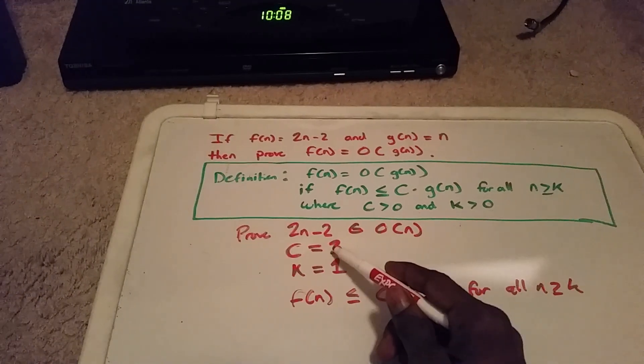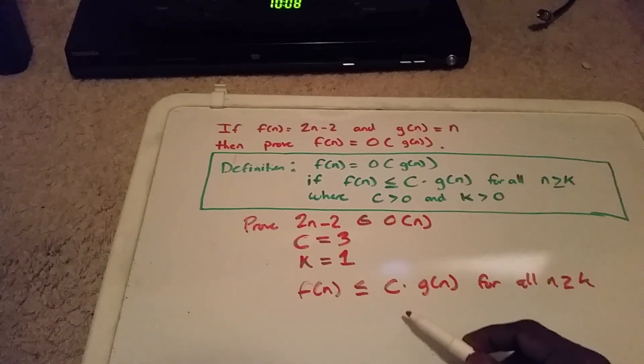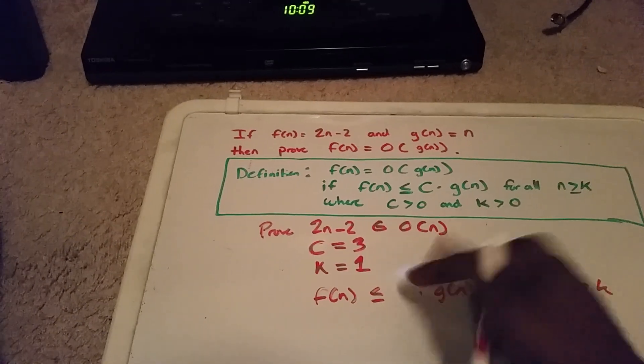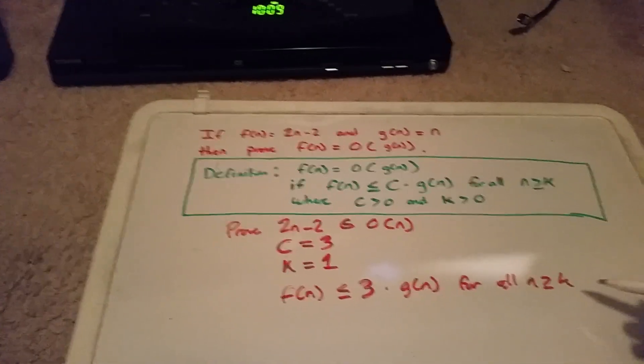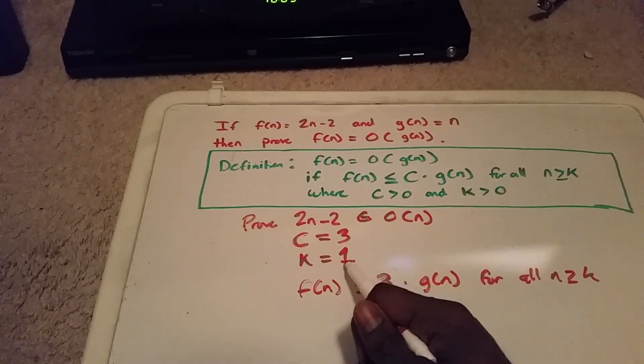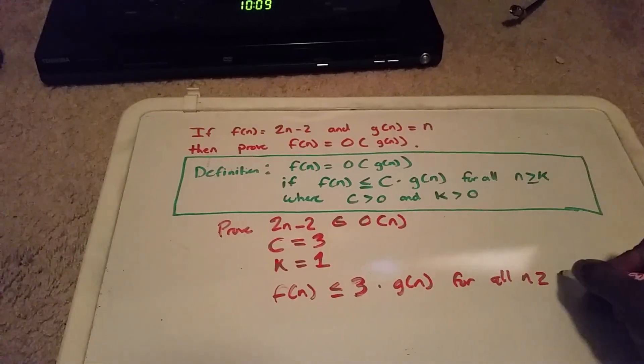We're letting c equal 3, so we can rewrite that here. And our k is going to equal 1, so we can substitute 1 in here.